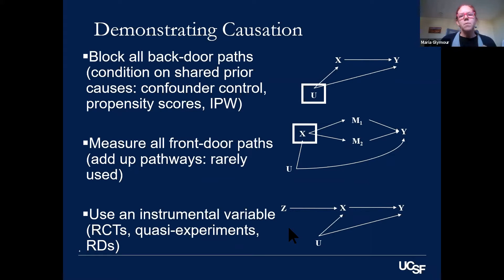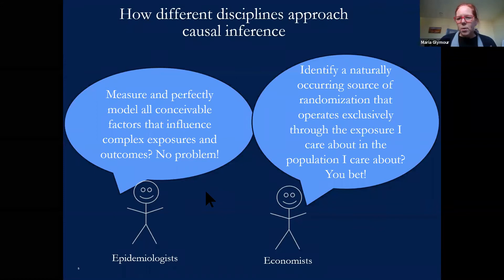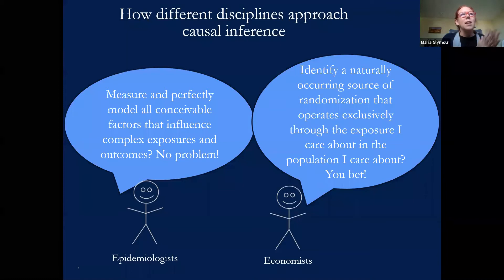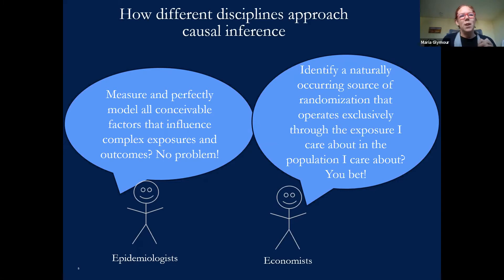The reality is that observational epi leans very heavily on backdoor paths — or what I'll call covariate control approaches. When I was in training, this was very heavily emphasized and almost nobody used instrumental variables except for some economists who were in health policy. I was a little bit surprised when I realized that there's a very large discipline adjacent to epidemiology called economics, where they take IV methods as the default method and find covariate control methods totally implausible. I made this little cartoon which I think is actually pretty descriptive of the disciplinary perspectives. For epidemiologists, we think if we can measure and perfectly model all conceivable factors that influence complex exposures and outcomes, that's what we're going to do with our backdoor covariate control observational epi.